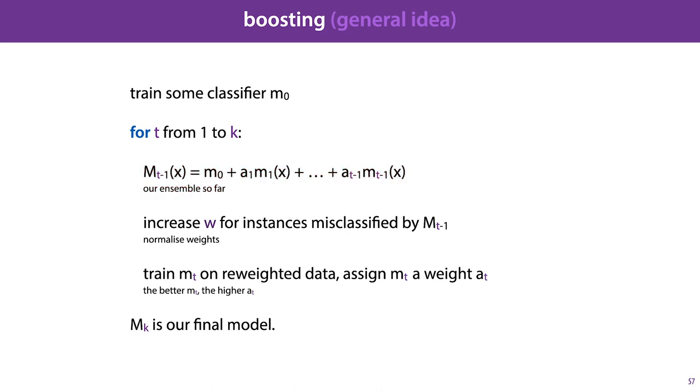We look at the predictions of our ensemble so far, which parts of our data it gets right and which parts of our data it gets wrong. We increase the weight for the instances it gets wrong, normalizing the weights afterwards. And we then train a new model on the re-weighted data. We assign it a weight based on how well it does, and we add it to the ensemble.